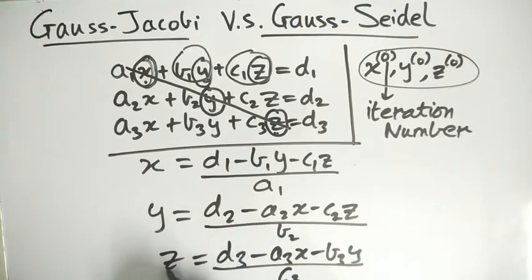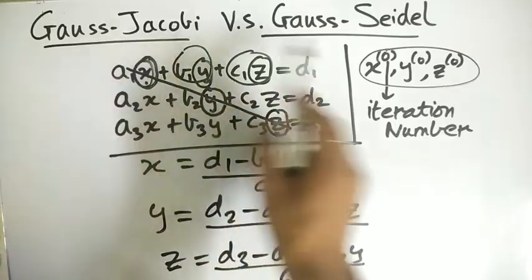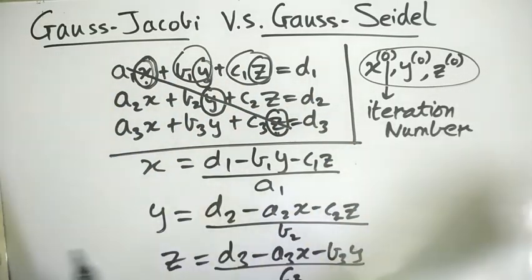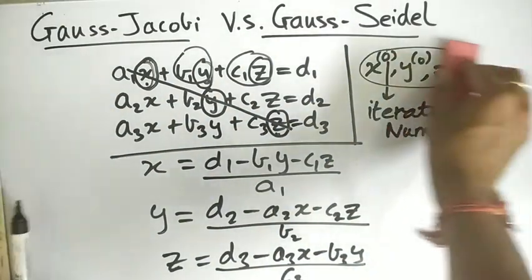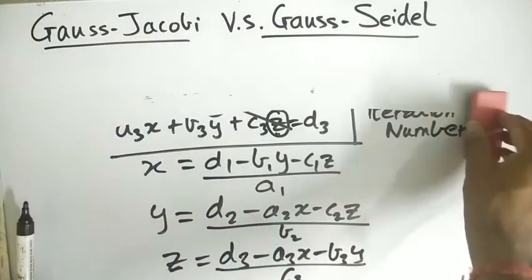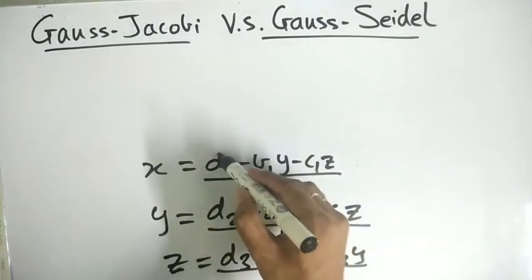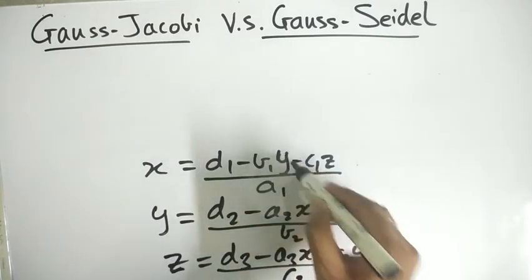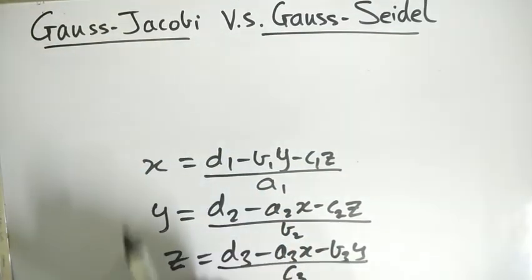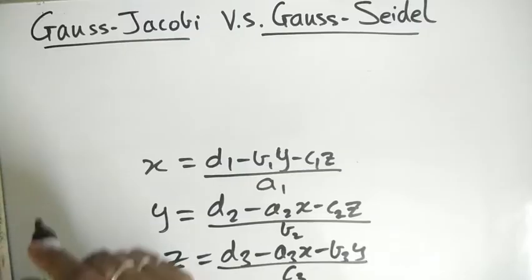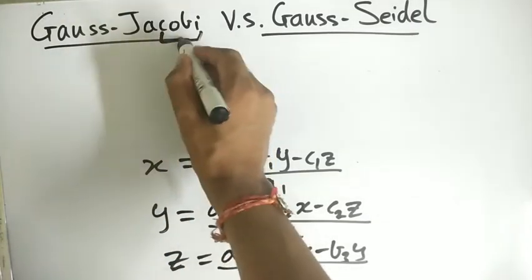Then what we do here—now this is the common step for both methods. After this, let's consider these methods individually. First, Gauss-Jacobi. Here, Jacobi means to copy.